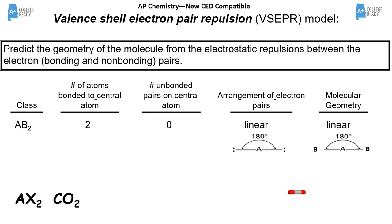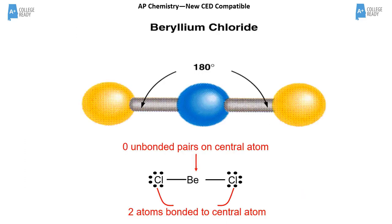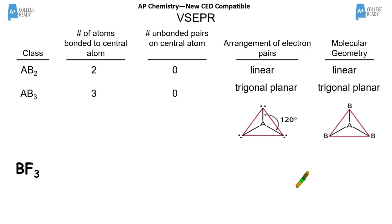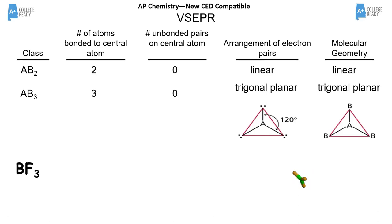Beryllium chloride, for example, has one electron region on the left and one on the right — electrons repel each other, keeping them as far apart as possible. For three regions of electrons the bond angle becomes 120 degrees — a circle is 360 degrees split into three even wedges of 120 degrees each — and we call that shape trigonal planar.